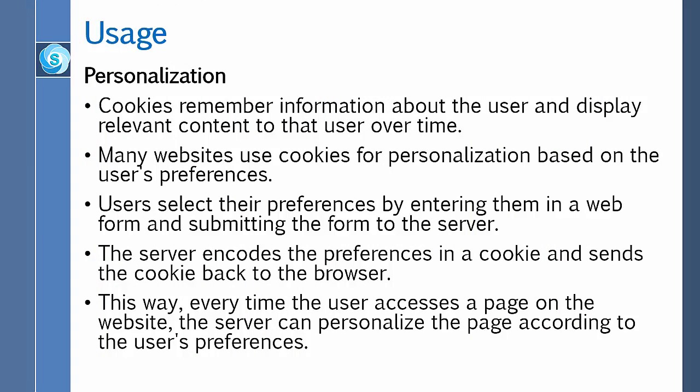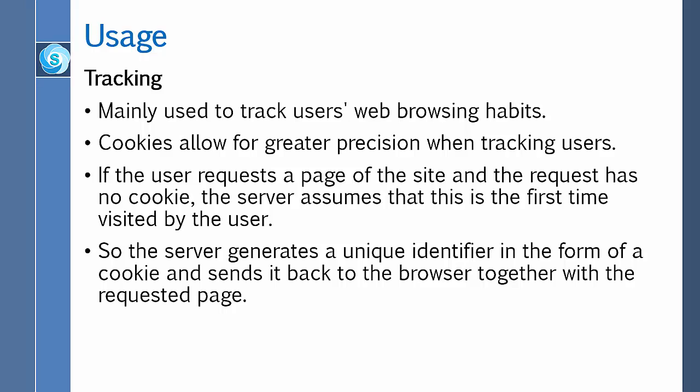Now let me talk about personalization. Cookies remember information about the user and display relevant content to that user over time. Many websites use cookies for personalization based on the user's preferences. Users select their preferences by entering them in a web form and submitting the form to the server. The server encodes the preferences in a cookie and sends the cookie back to the browser. This way, every time the user accesses a page on the website, the server can personalize the page according to the user's preferences.